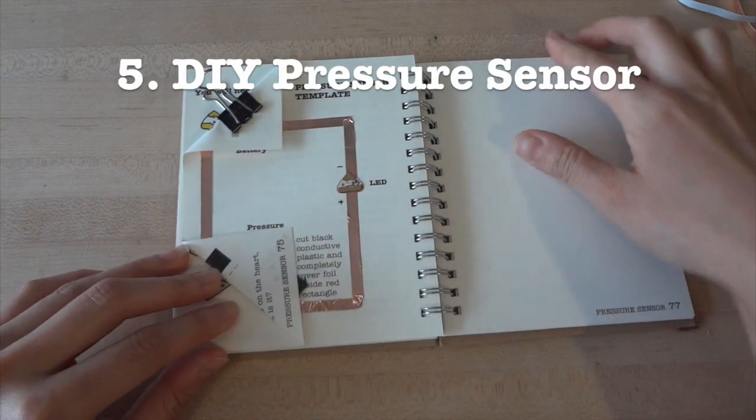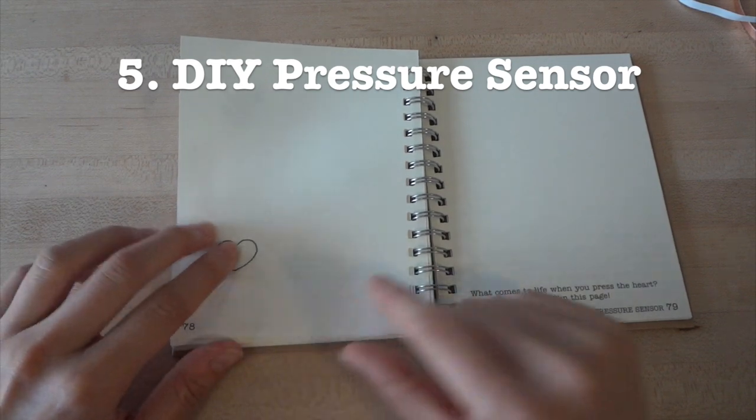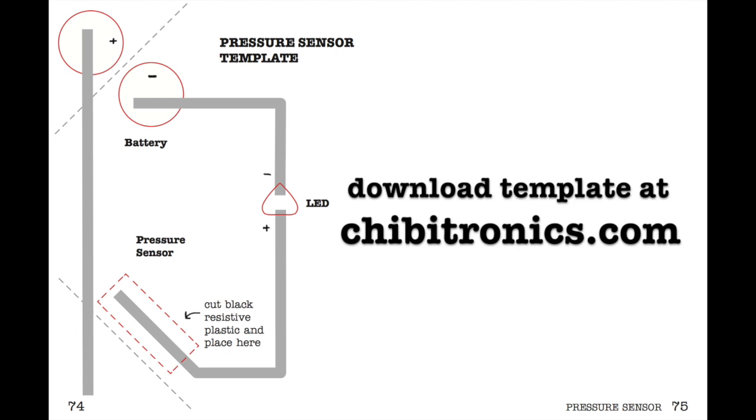Hi! In this tutorial, we'll show you how to make your own pressure sensor. This lets you fade a light on and off depending on how hard you press. We'll be using a template from the Circuit Sticker Sketchbook, which you can download at chibitronics.com.